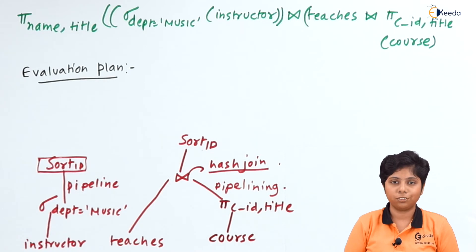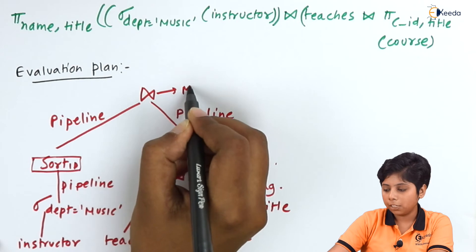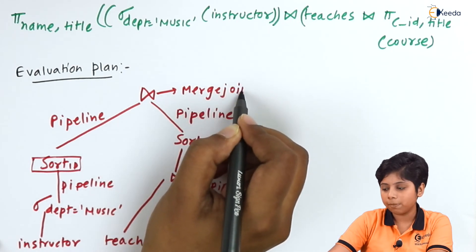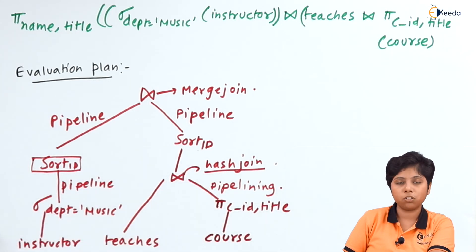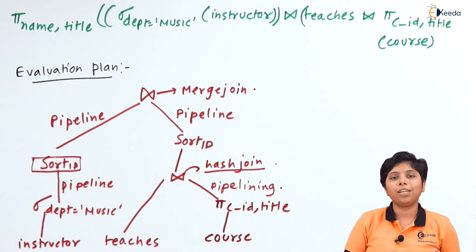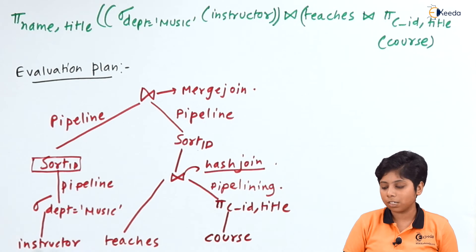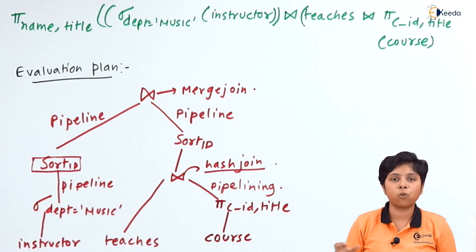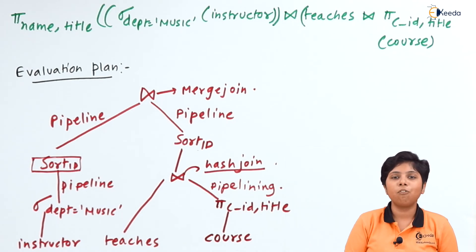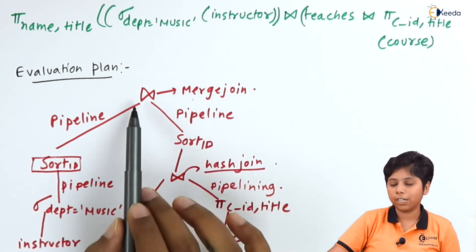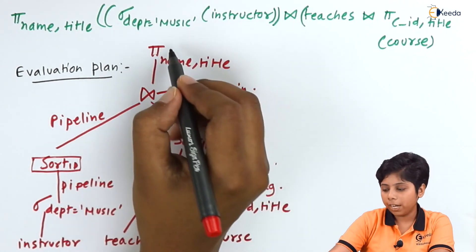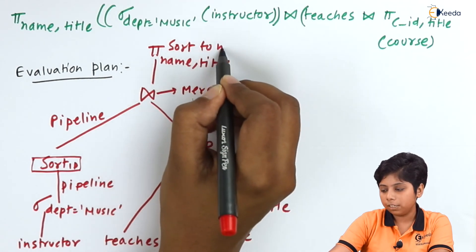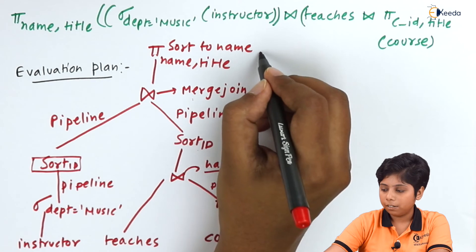The fourth evaluation plan is to sort by ID over the join of teaches and course. Since we now have two pipelined sort results, we use a merge join. I choose merge join because the sort-by-ID gives the instructor relation aligned with teaches, so we can merge on instructor ID equals teaches ID and also course ID, producing the final resultant relation.